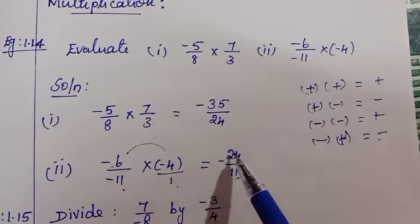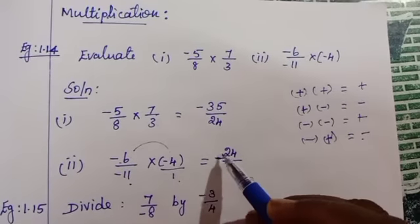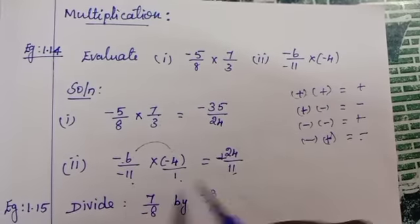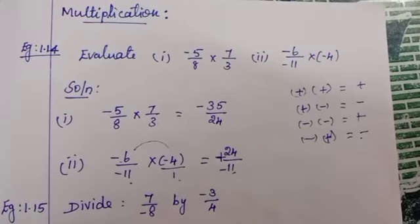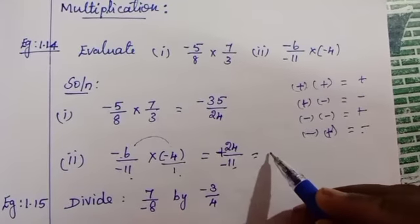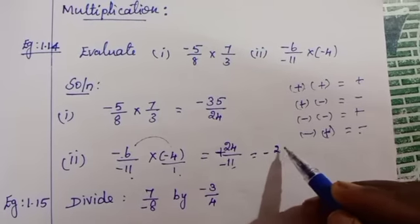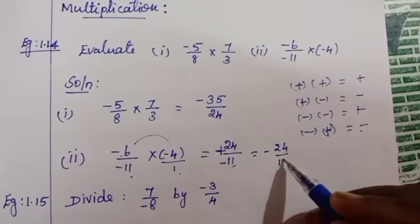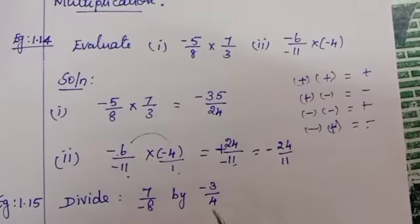Minus into minus equals plus. Here in the denominator it is minus, so that is equal to plus by minus. So that is -24/11.